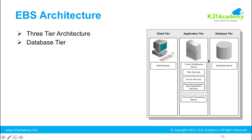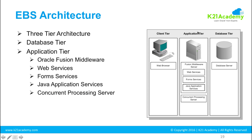In this three-tier architecture, the extreme right is the database tier, and it always uses Oracle Database — you cannot use other databases with Oracle eBusiness Suite. For version 12.2.6, the latest is 12c, but we are going to work with the 11g version. The database may be upgraded to 12c. The application tier in the middle holds business logic, running on top of Oracle Fusion Middleware. We'll go deep dive into that in upcoming modules.